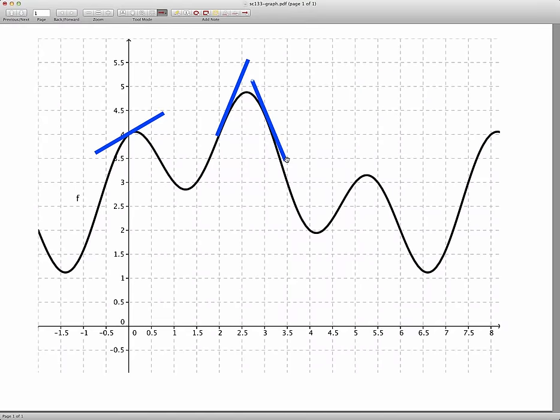So we can go through and estimate the derivative of this function at really any point we wish, because I have a nicely drawn graph, and because I have a nice grid underneath it. And with those two ingredients, we can use the graphical concept of the derivative as the slope of the tangent line to estimate our derivative values. Thanks for watching.